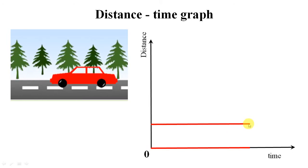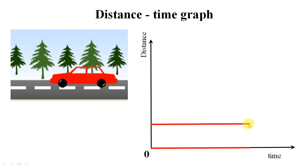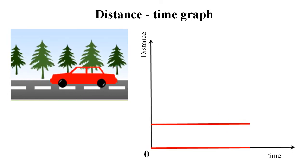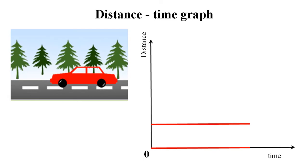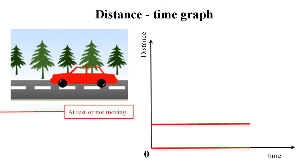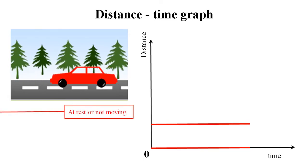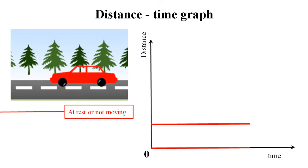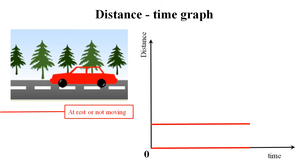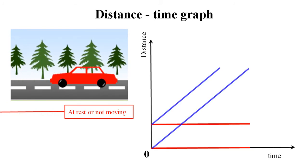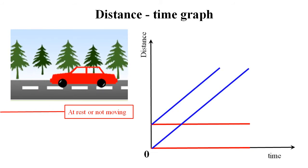This means the body is absolutely at rest — it is not moving at all. So the first case represents a body at rest. Let's move on to the second case, where the graph is a straight line, one of them passing through the origin.